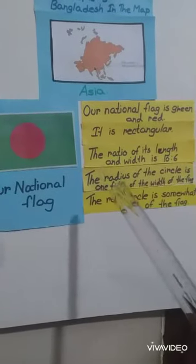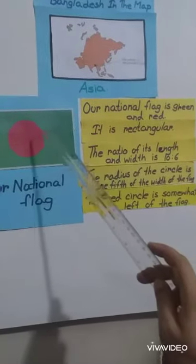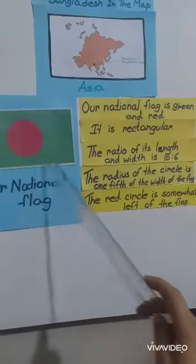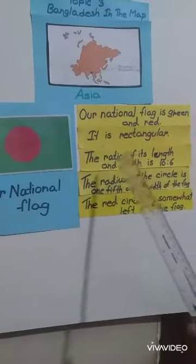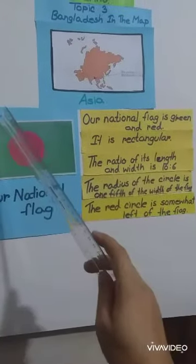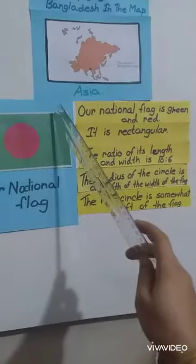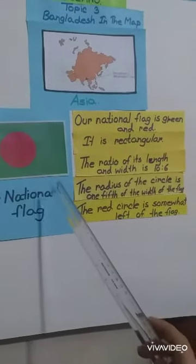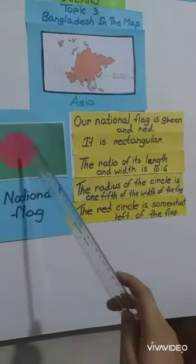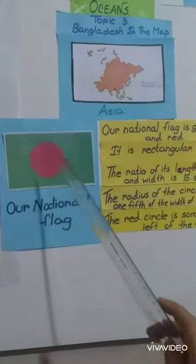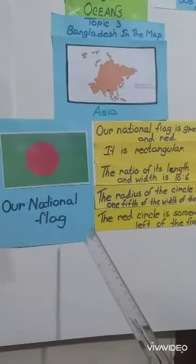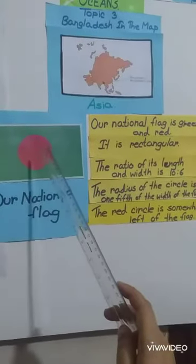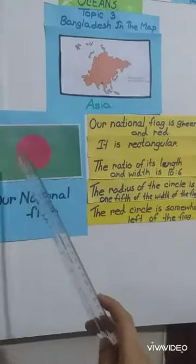Now we memorize about our national flag. Our national flag is green and red. It is rectangular. The ratio of its length is 10 and width is 6. The radius of the circle is one-fifth of the width of the flag. The red circle is somewhat to the left of the flag.